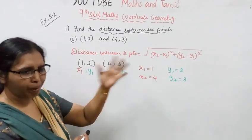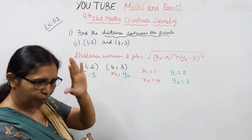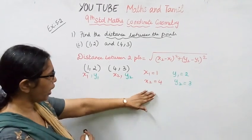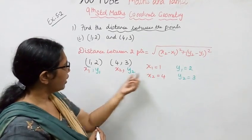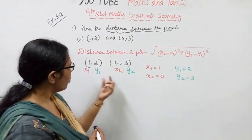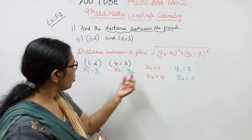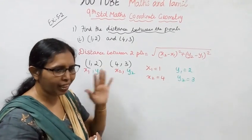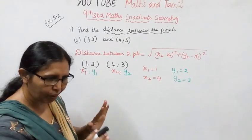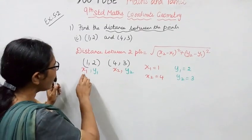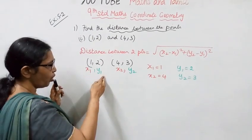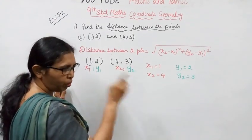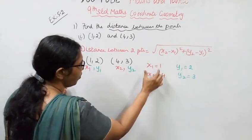Now apply the formula. Here x1 is 1, x2 is 4, y1 is 2, y2 is 3. The formula is square root of (x2 minus x1) whole square plus (y2 minus y1) whole square.